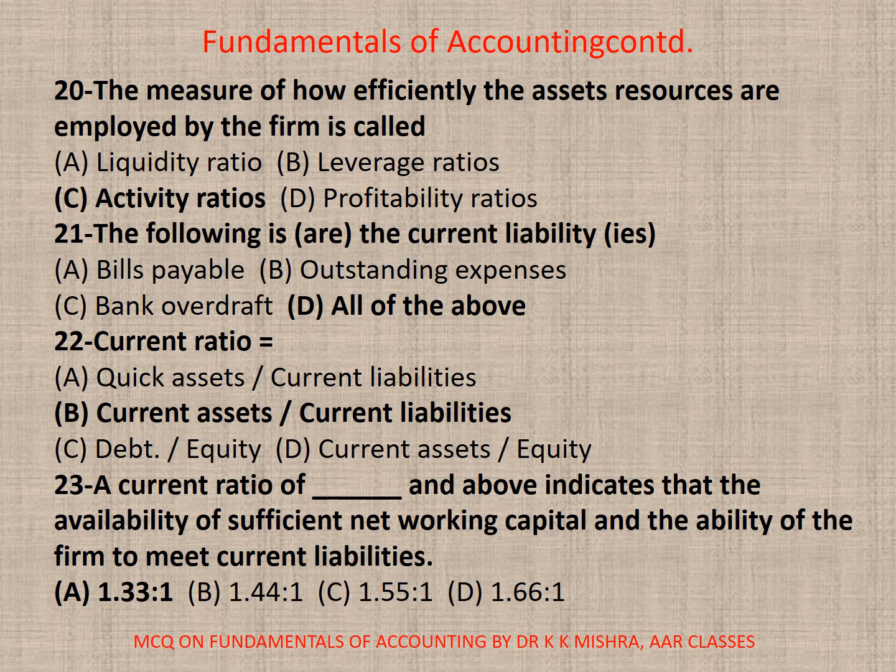Question 22: Current Ratio is equal to — Correct option is B: Current Assets upon Current Liabilities. Question 23: A current ratio of 1.33:1 and above indicates the availability of sufficient net working capital and the ability of the firm to meet current liabilities. Correct option is A. 1.33 to 1.